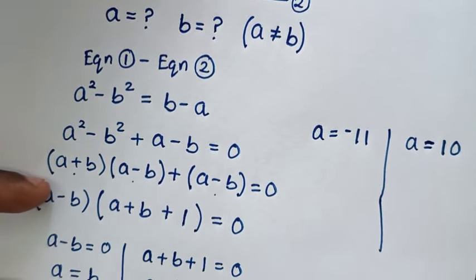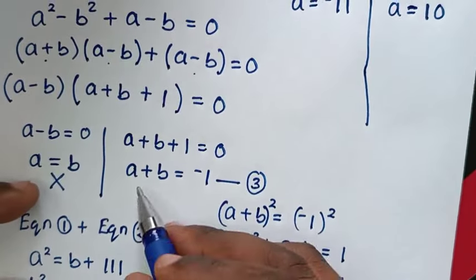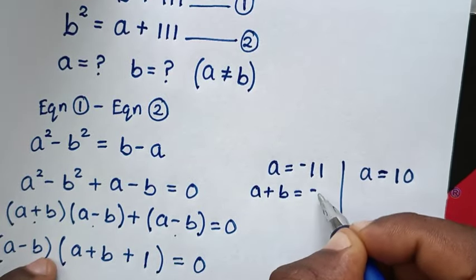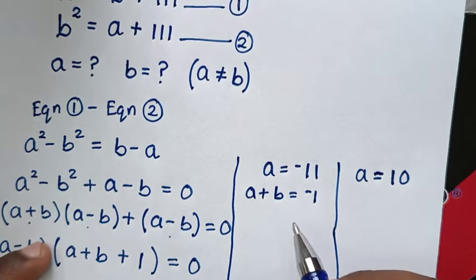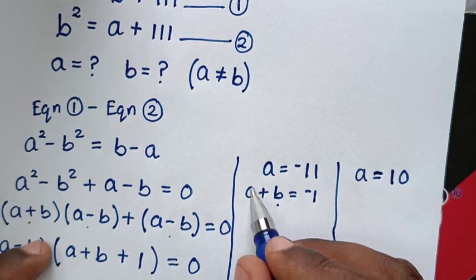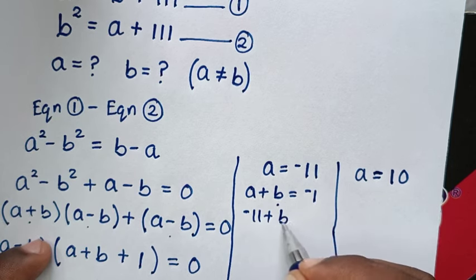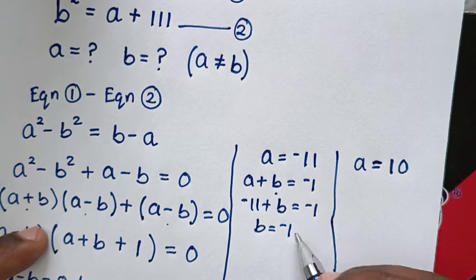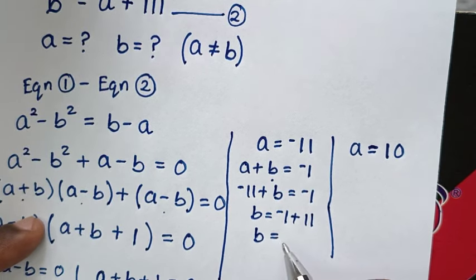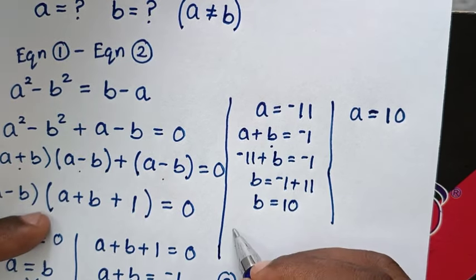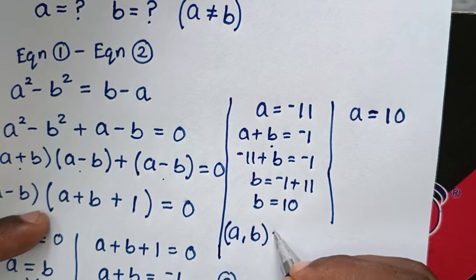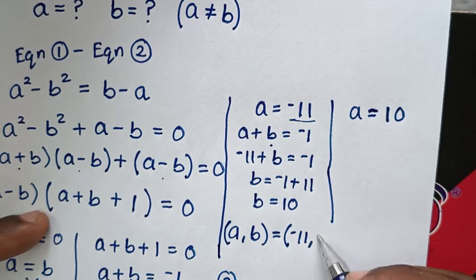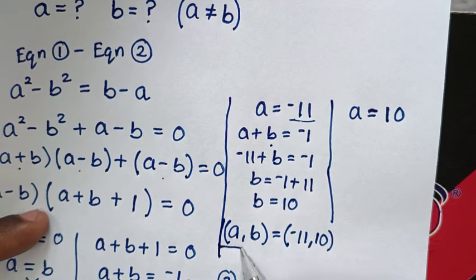To get the values of b, we use equation 3: a plus b equals negative 1. For the first solution, substituting a equals negative 11 gives negative 11 plus b equals negative 1, so b equals negative 1 plus 11, which is 10. Therefore the first solution pair (a, b) is (negative 11, 10).